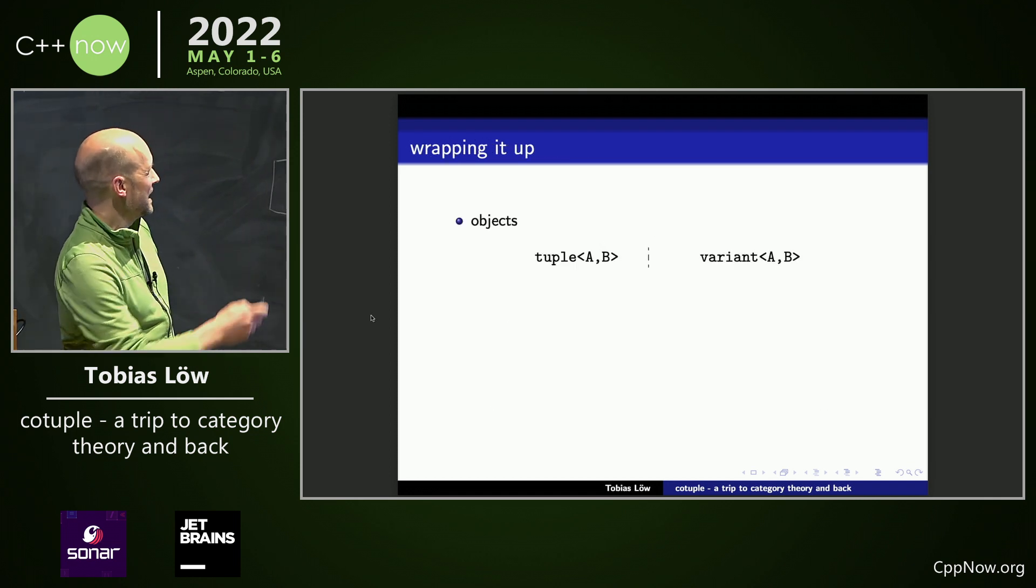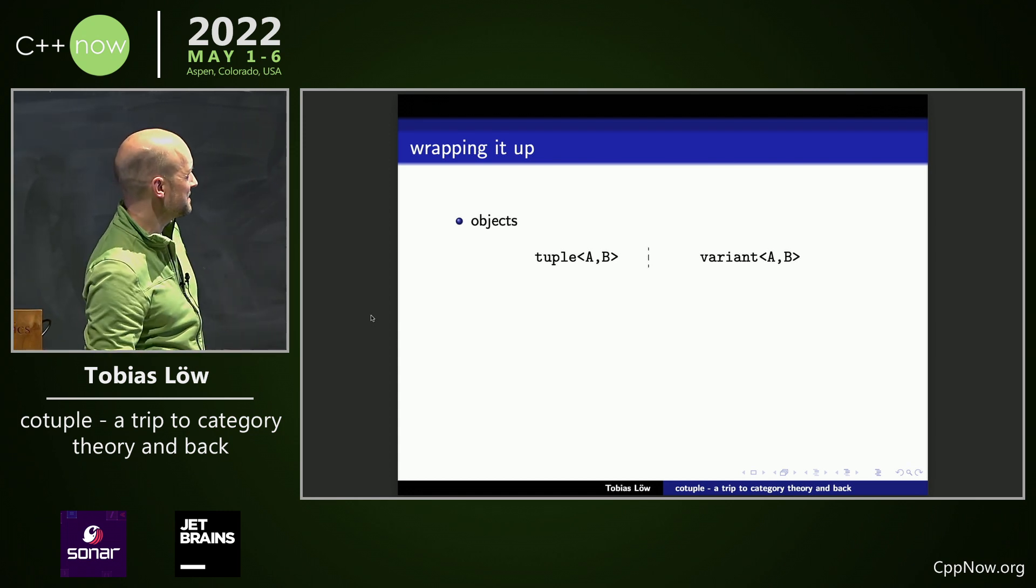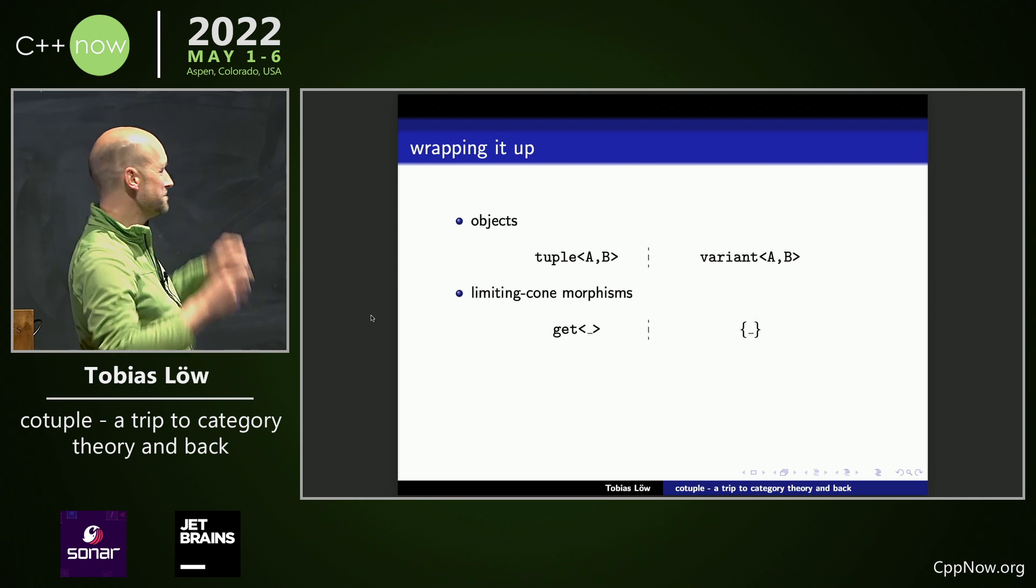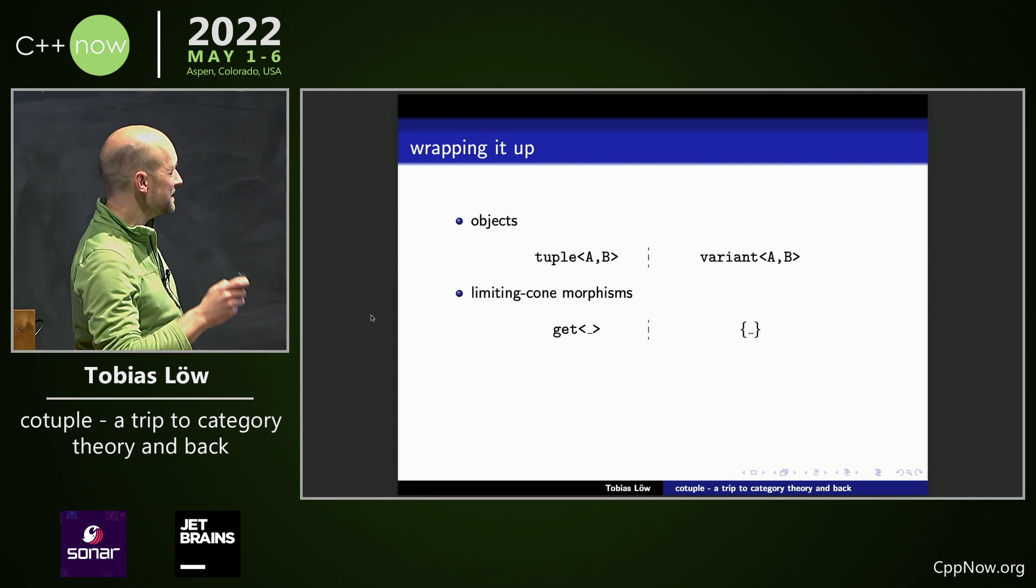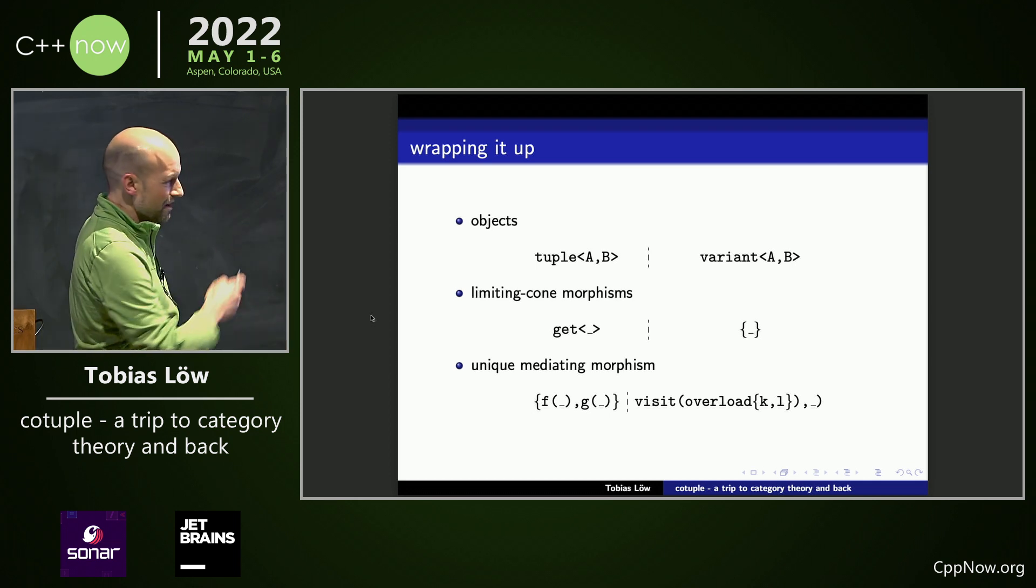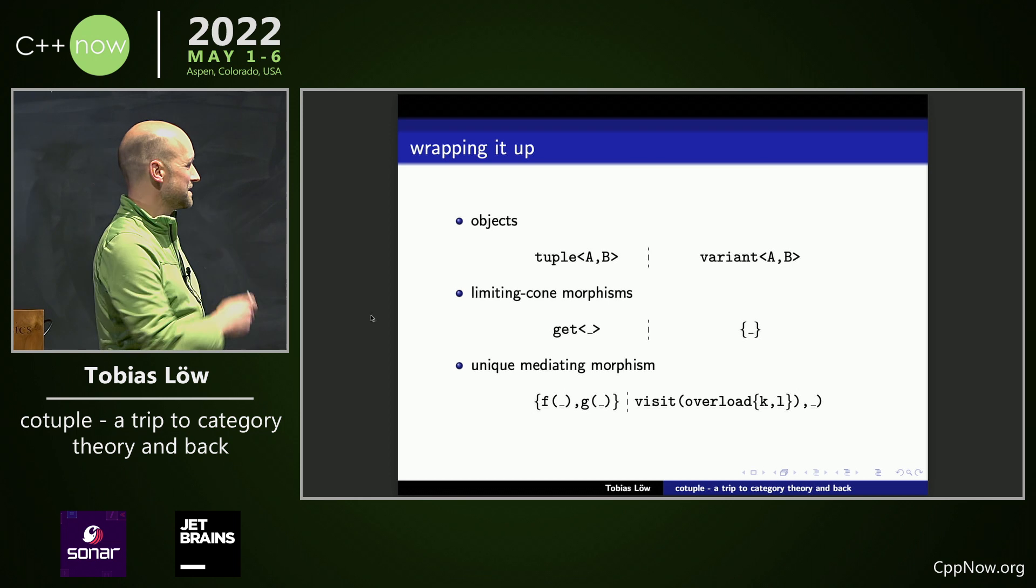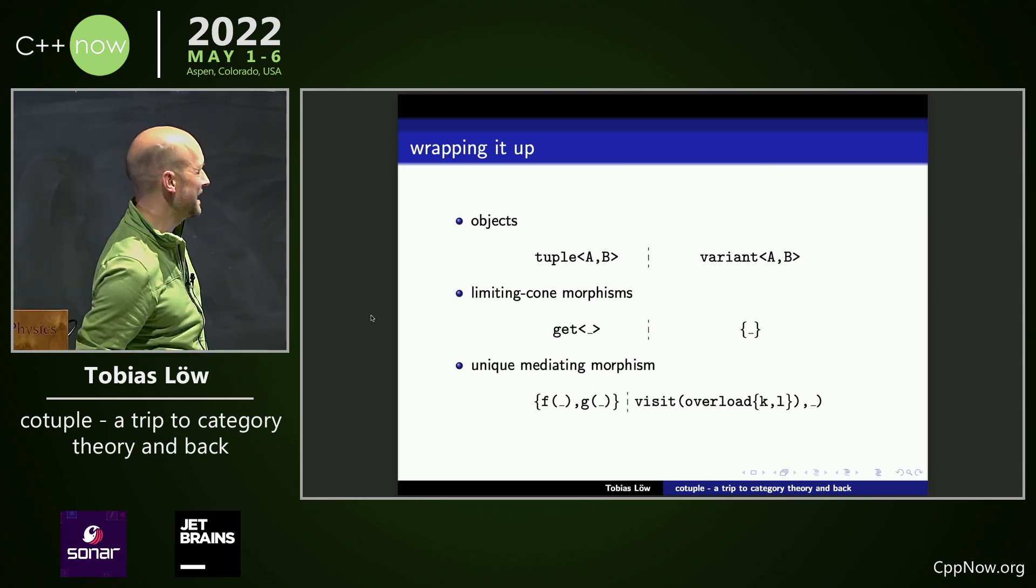So, we have objects, tuple on the one side, variant at the other side. We have the limiting cone morphisms, that's get, and on the other hand, it's a constructor. And the unique mediating morphism is, on the left hand side, it's building the tuple. On the other hand side, it's visiting through the overload of K and L.